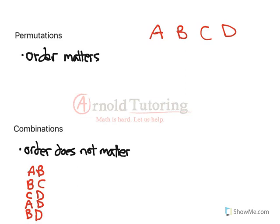Are we missing any others? We're also missing A and C. So those are the six different pairs. That's going to be combinations, because the order doesn't matter.